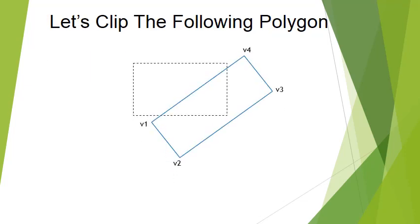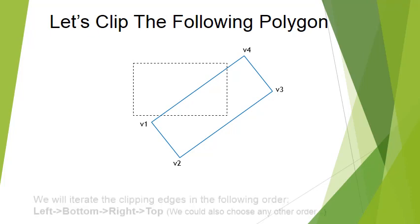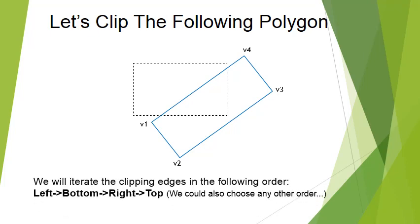We have the following polygon — let's clip it and leave only the part inside the clipping area. We are going to iterate over the edges in the following order: first the left edge, then the right edge, then the bottom edge, then the top edge. But we could also use any other order — it's arbitrary.